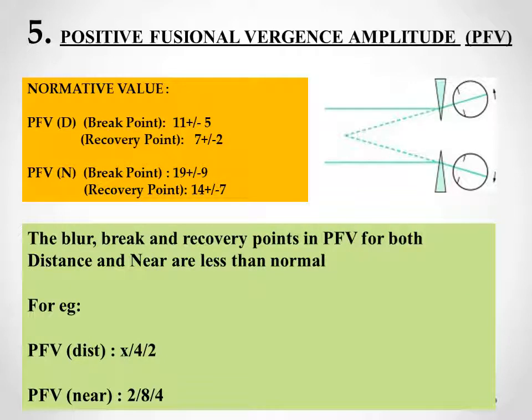The 5th test is the positive fusional vergence (PFV) amplitude test, which assesses the maximum capability of the patient to converge using a base-out prism bar. Base-out prism stimulates convergence, as shown in the picture where base-out prisms are kept before the patient's eyes. In convergence insufficiency, the patient will not be able to converge as much as required even when stimulated with the base-out prism. In the example, for distance there was no blur, the break point was at 4 and recovery was 2; for near the blur point was at 2, break at 8 prism diopter base-out, and recovery at 4 prism diopter base-out.